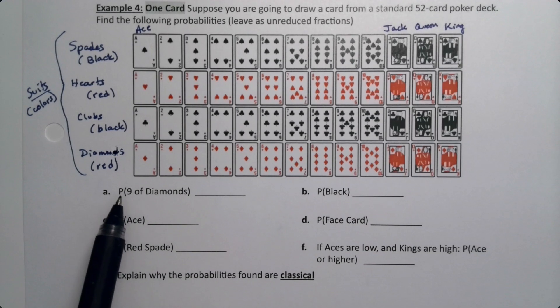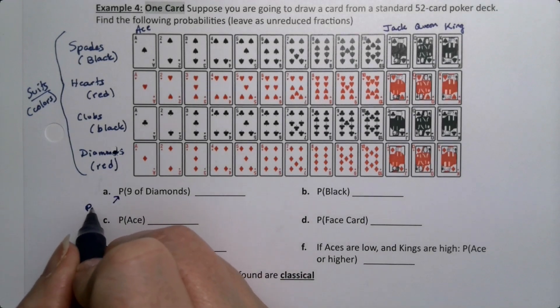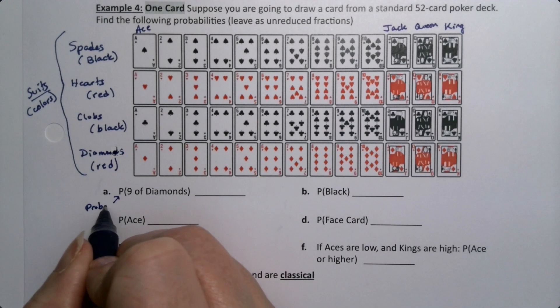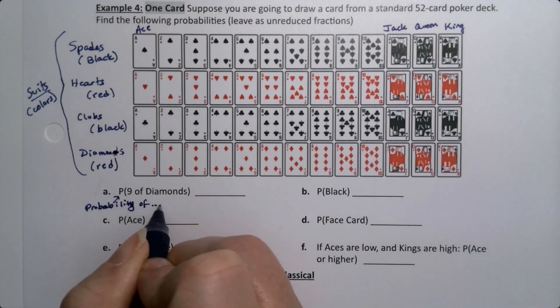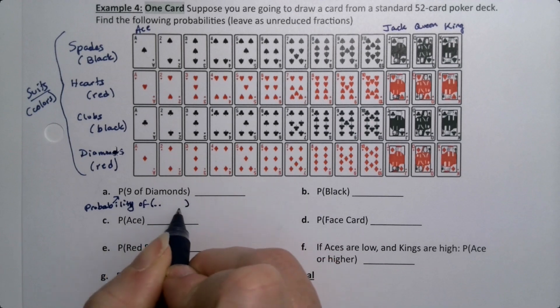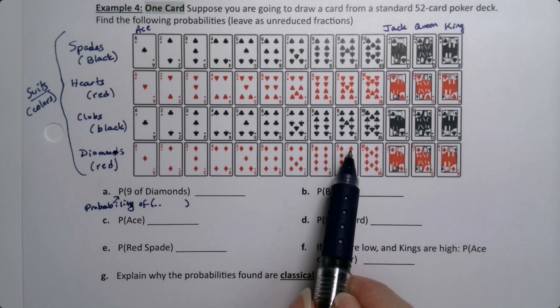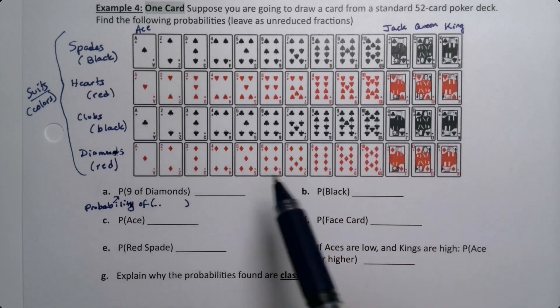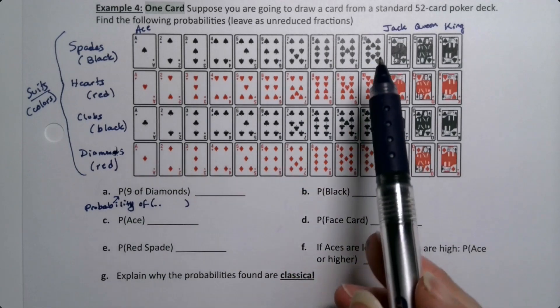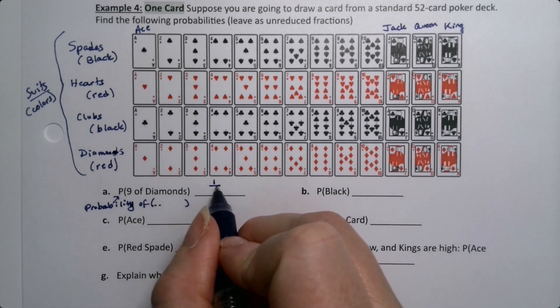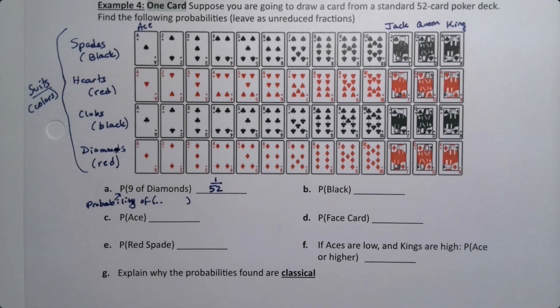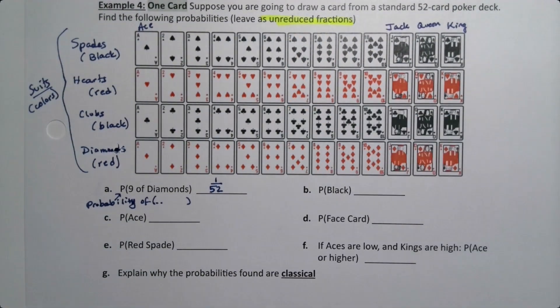So we want to find the probability, because remember capital P stands for probability. So whenever you see a P with a parenthesis, it's saying find the probability of whatever's in that parenthesis. So find the probability of the nine of diamonds. Well, the nine of diamonds is right here. It is one card out of the 52 cards total, because there's 13 times 4, so 52. So it's 1 out of 52.